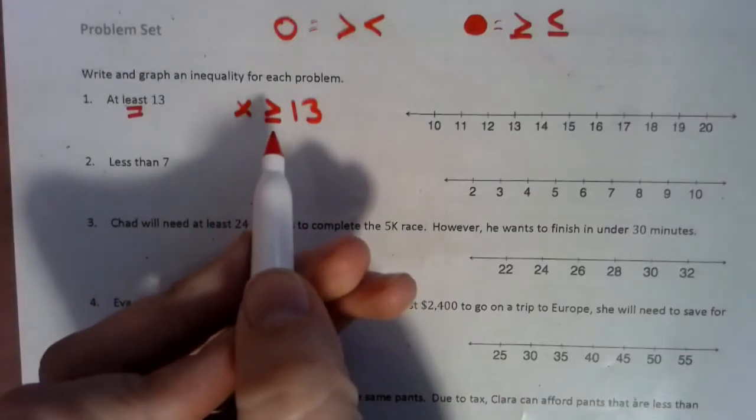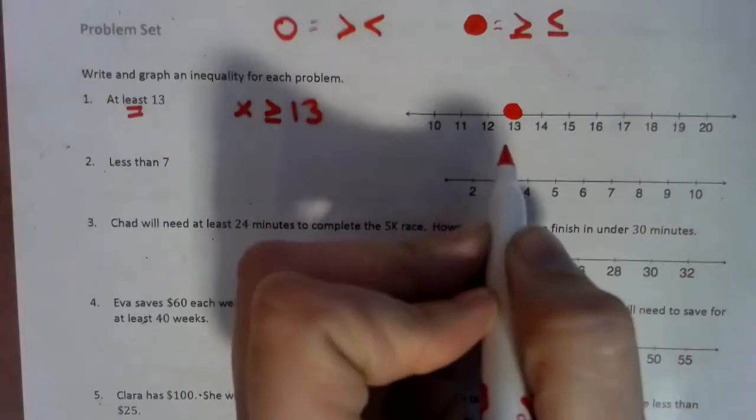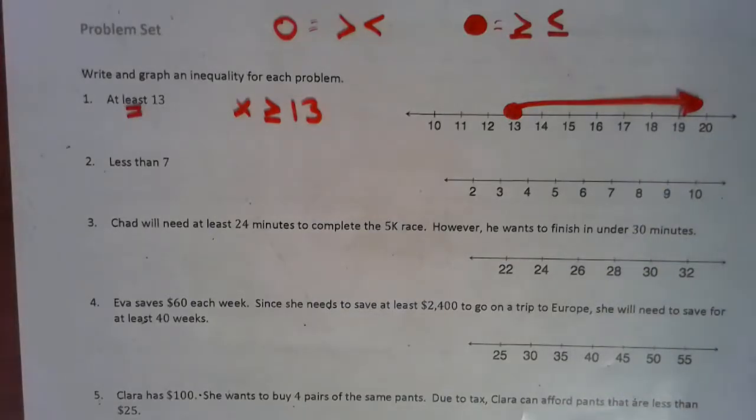Now we get to graph it. So since we use this sign, we've got to color in our circle. So we find 13, and we color in the circle, and any number that is larger works. So we draw an arrow shooting that way.